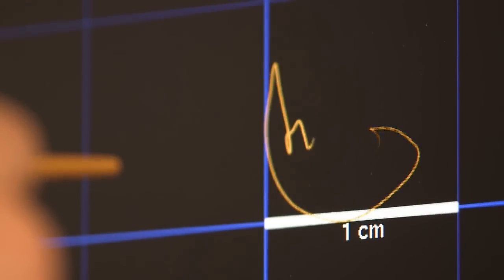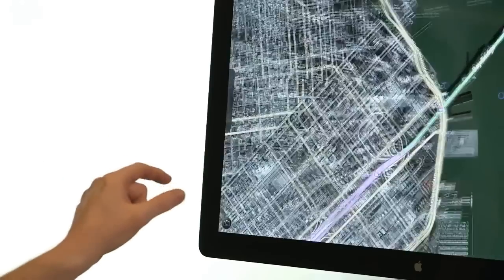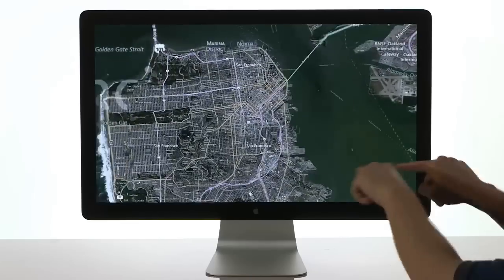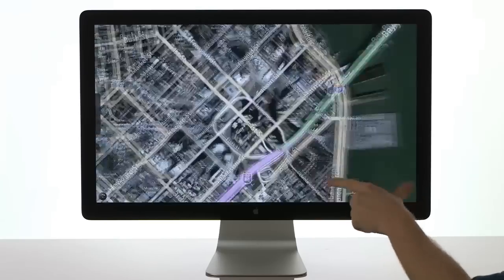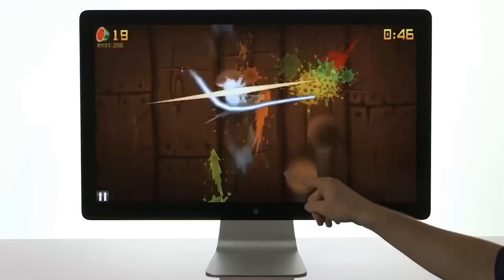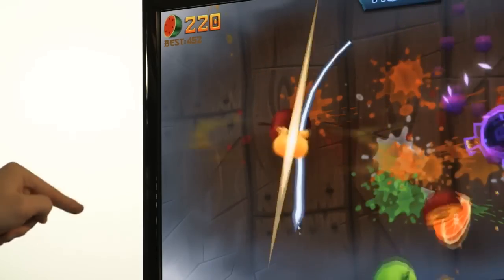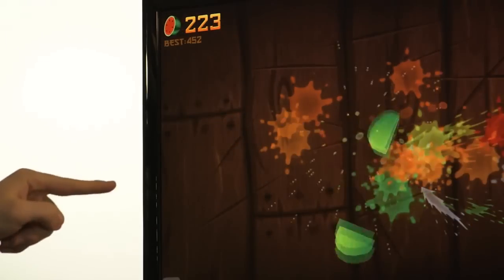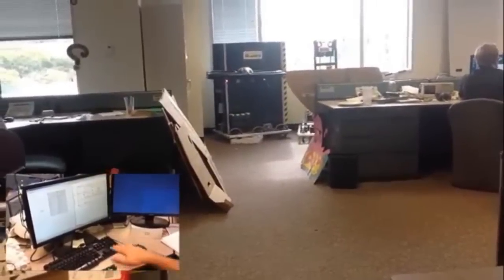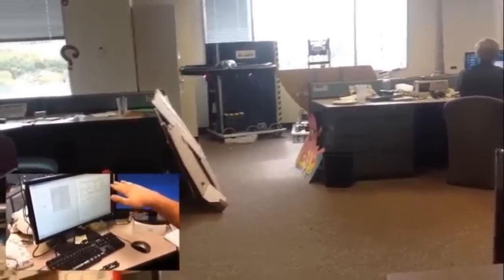Leap Motion claims this device is 200 times more accurate than anything on the market and can track your finger movements down to one-hundredth of a millimeter. Leap Motion has created a software developer's kit so that others can write apps for the device. The company plans to send 10,000 free units to developers so they can start writing apps today. Check out this guy who has already figured out how to use LabVIEW and Leap Motion to fly a quadcopter.